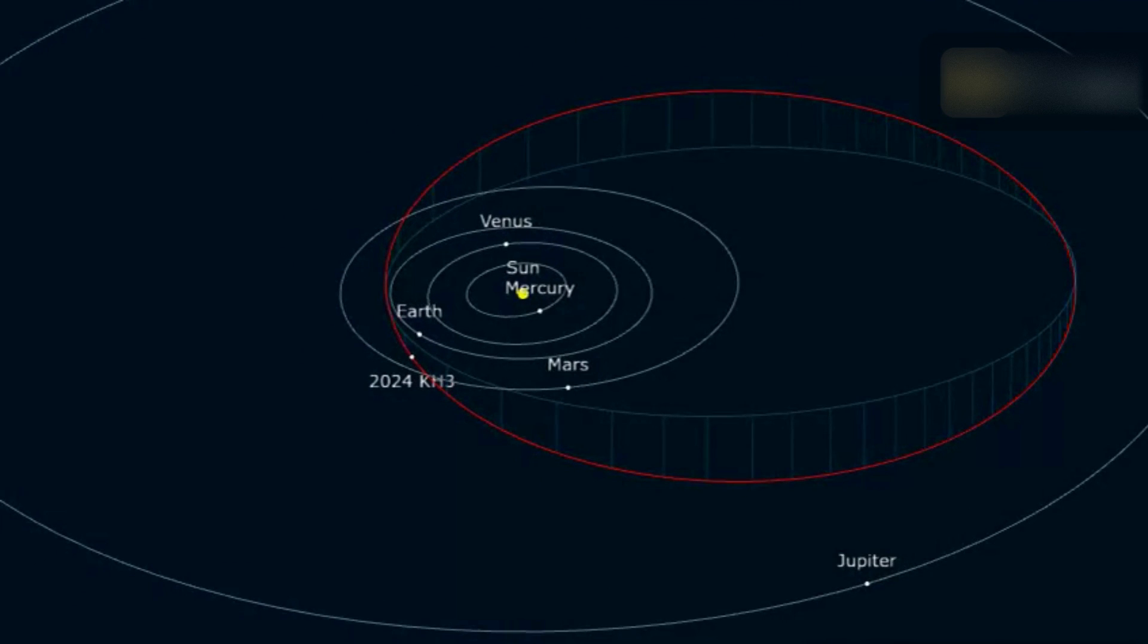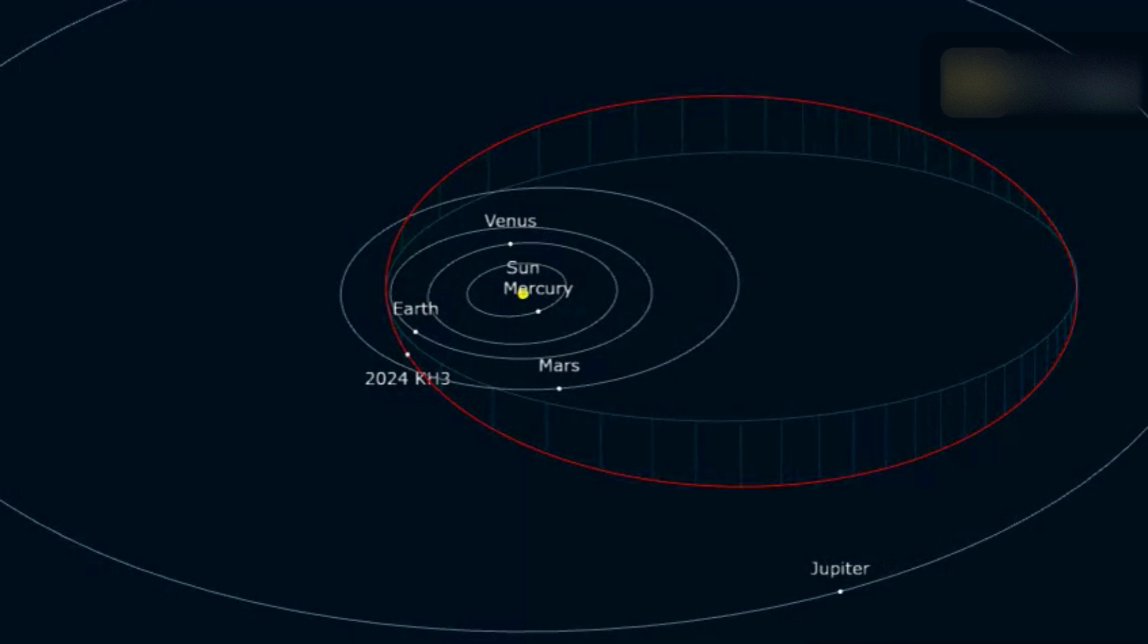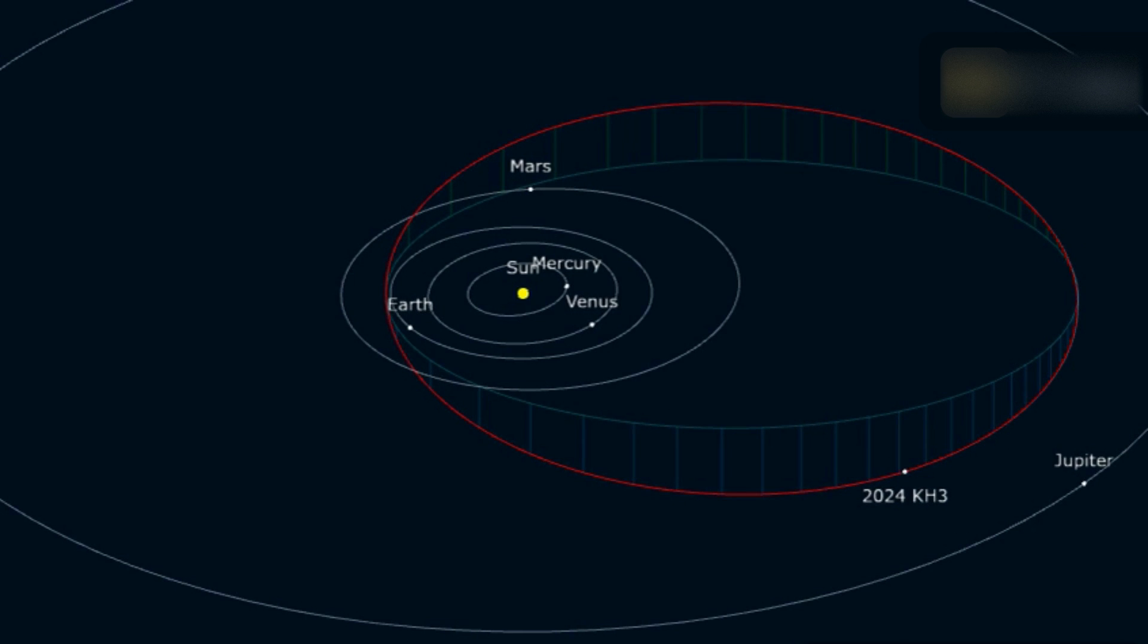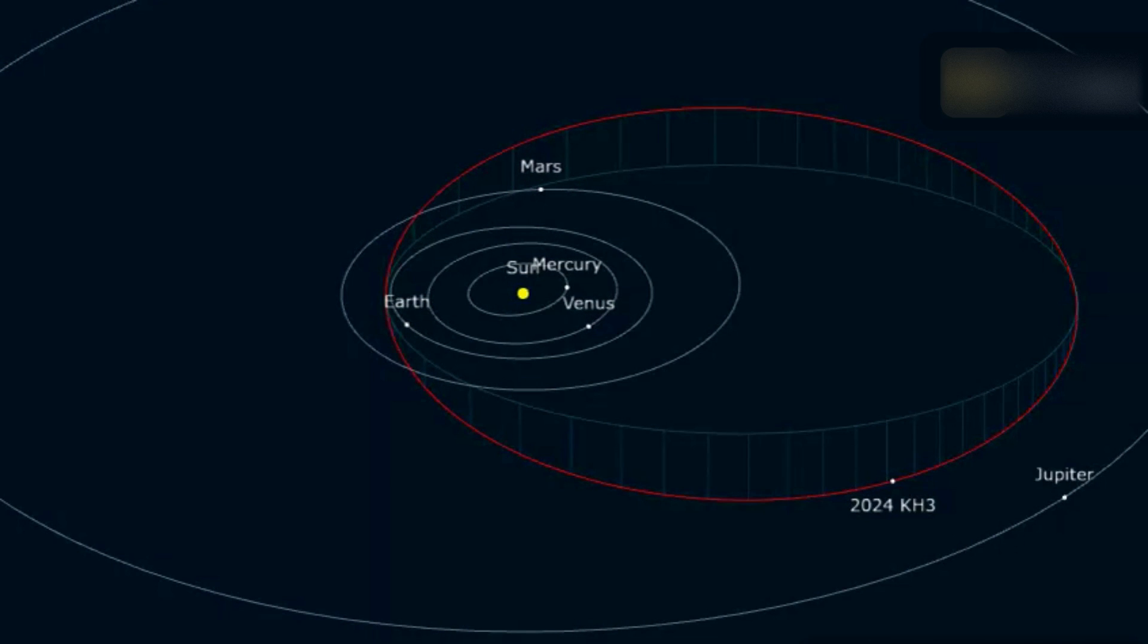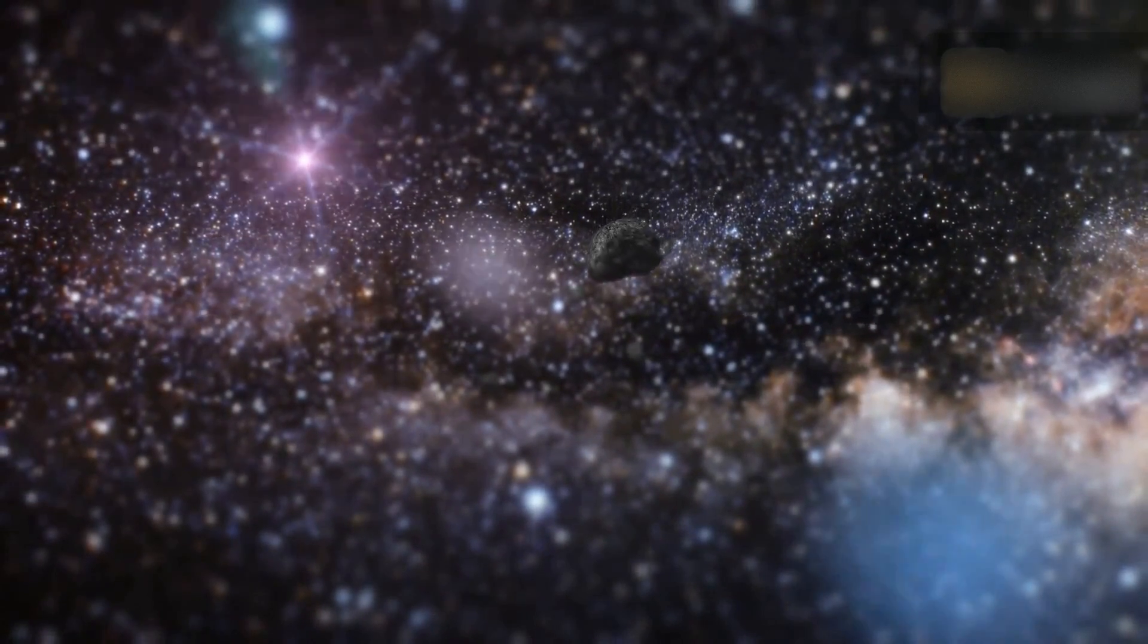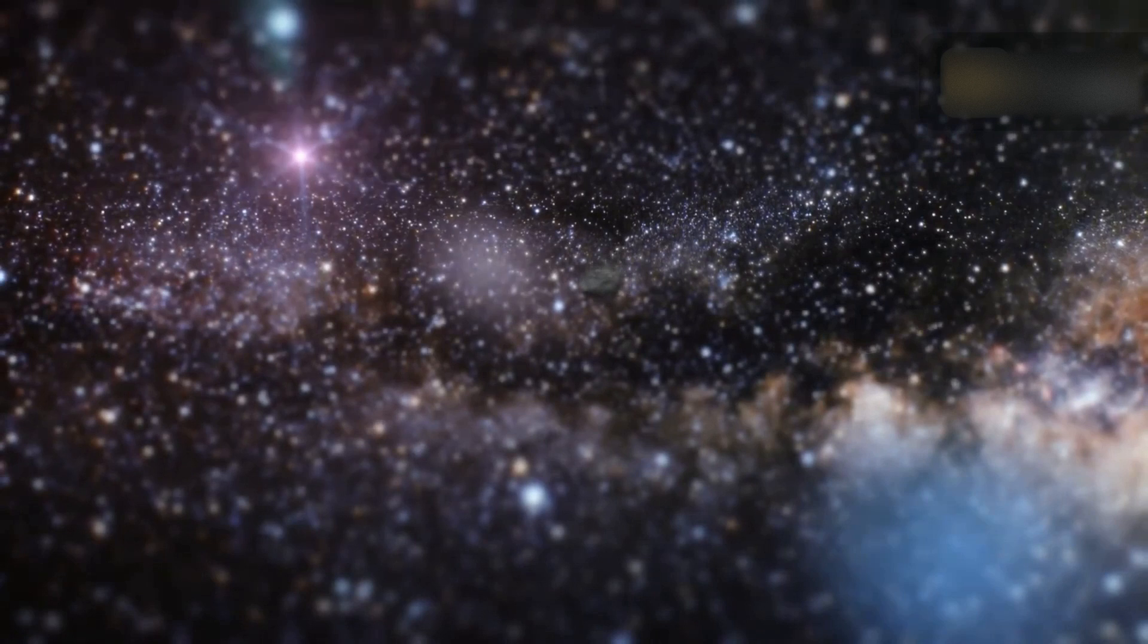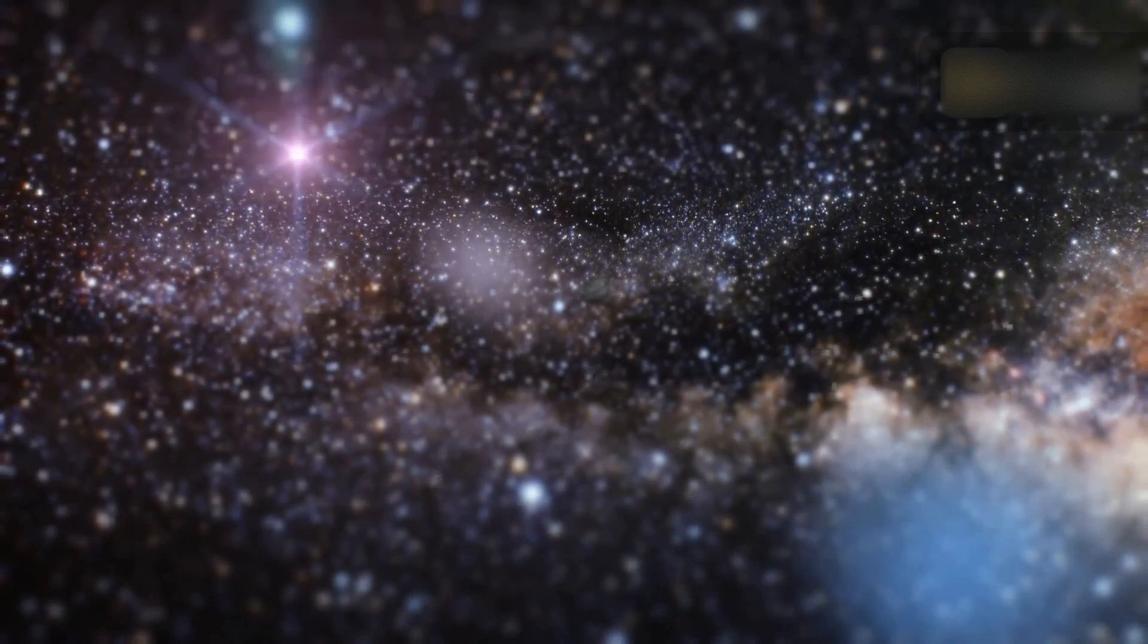NASA's Jet Propulsion Laboratory is using an advanced tracking system to monitor the orbit of 2024 KH3. According to their calculations, the asteroid will make its closest approach to Earth on the specified date, but it should pass by Earth safely without any problems. The closest approach is likely to occur well outside the orbit of the Moon, so there is no risk of a collision. According to the latest available information, an asteroid impact with Earth is not expected in 2024.